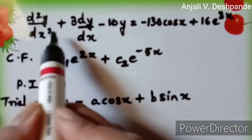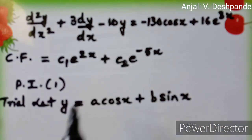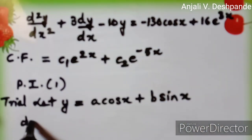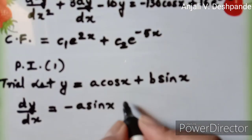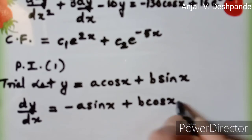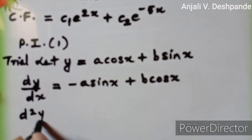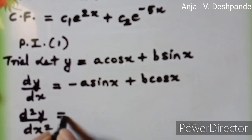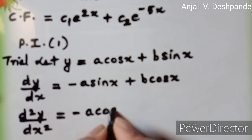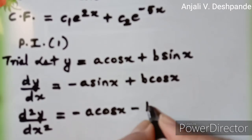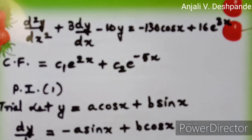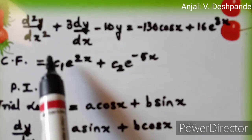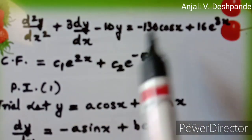In our equation we have d²y/dx² plus 3 dy/dx. So we are going to find: dy/dx is equal to minus a sin x plus b cos x, and d²y/dx² is equal to minus a cos x minus b sin x. Now, we are going to substitute all these values — that is y, dy/dx, and d²y/dx² — into the given differential equation.